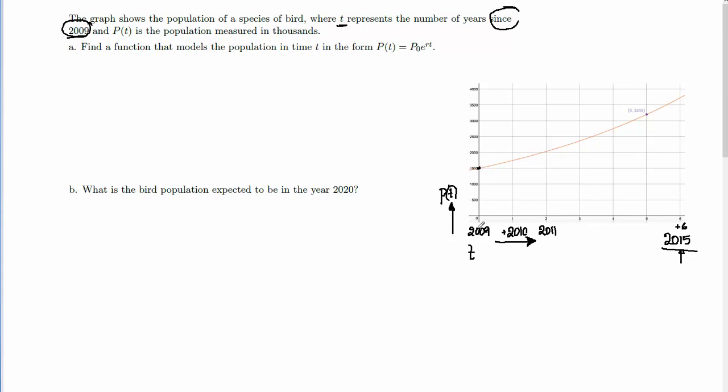The p(t) also gives us the population at the specific year. At the initial population in 2009 will be 1,500. After one year, it will be somewhere between 1,500 and 2,000, somewhere in 1,750, and so on. And we can see right here that we have a point that says 5, 3200. So this means that the population at year 5, that is 2014, is going to be equal to 3,200. So this is how we read our graph.